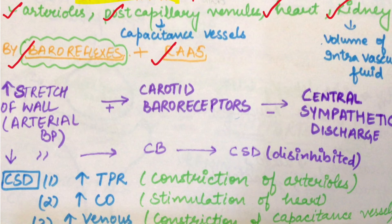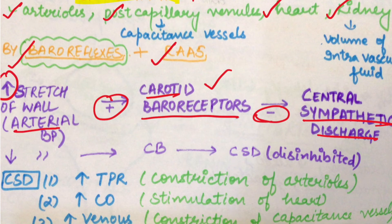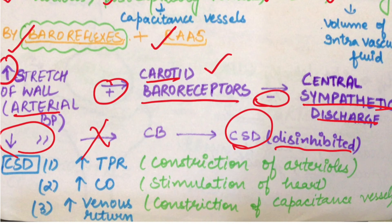Baroreflexes: in our artery, when there is normal blood flow, the artery wall is stretched. When the artery wall stretches, carotid baroreceptors are stimulated, and they inhibit sympathetic discharge from CNS. If blood pressure reduces, the stretch is reduced, so carotid baroreceptors are not stimulated — they will not inhibit central sympathetic discharge. That is disinhibited — now sympathetic discharge will increase, which will eventually increase blood pressure.